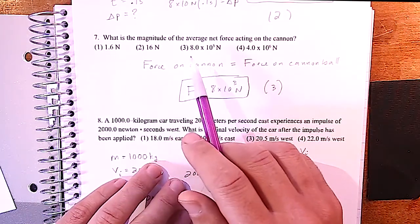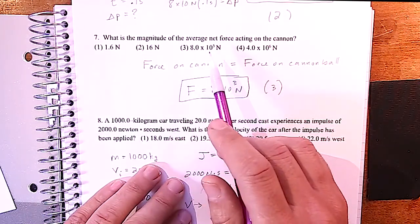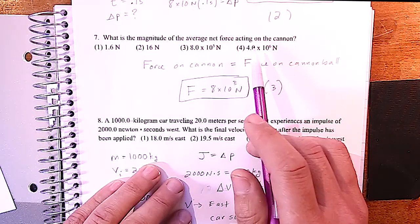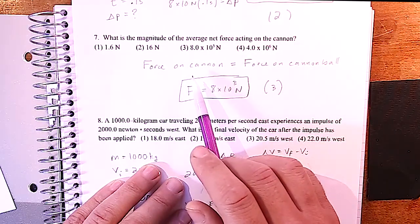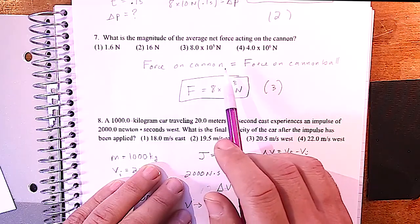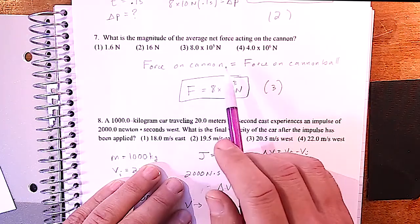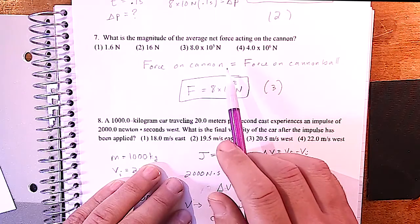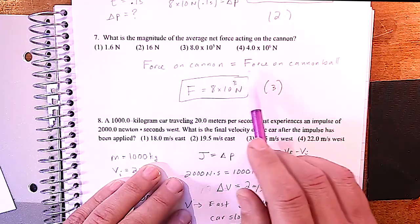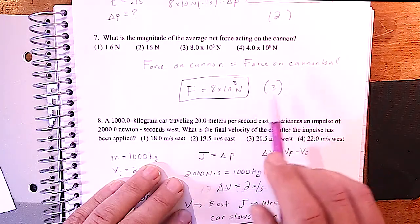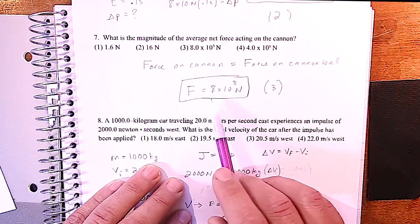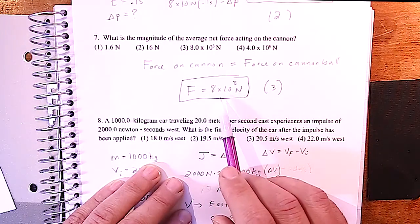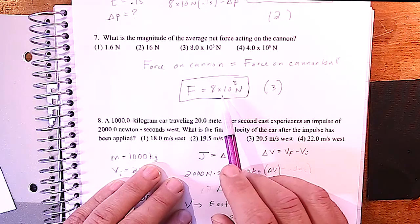What is the magnitude of the average net force acting on the cannon? The force pushes on the cannon, and by Newton's third law — for every force there's an equal and opposite force — the force on the cannon equals the force on the cannonball. They gave us 8,000 newtons for the cannonball, so that must also be the force acting on the cannon.